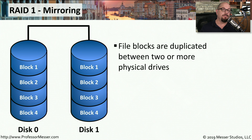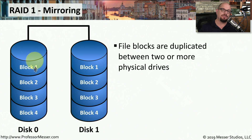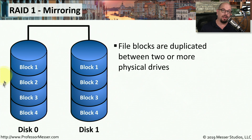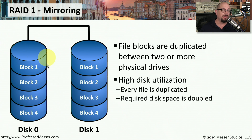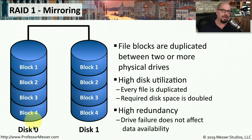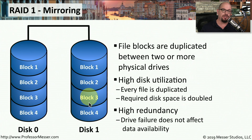RAID 1 mirrors information across different drives. Using the same scenario of two drives, instead of splitting a file across the drives, we write exactly the same information to both drives, effectively creating a mirror of each other. This means we use a lot of drive space — we effectively double the amount of drive space required to store a single file. But if we lose one of these drives, we still have 100% uptime because we have another working drive with an exact duplicate of that information.